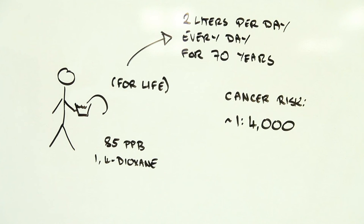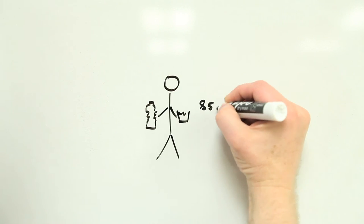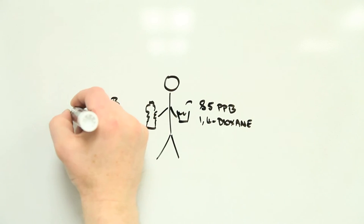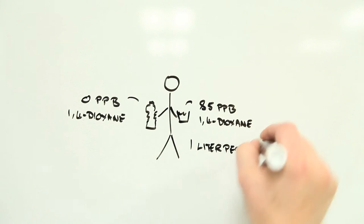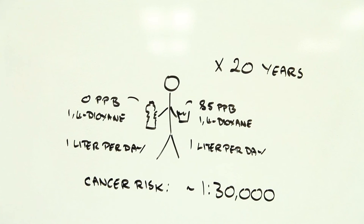So what if we consider a more realistic scenario? Imagine, for instance, that you've lived in Ann Arbor for 20 years and only drink 1 liter a day of tap water. Your highest dioxane-related cancer risk in this case is closer to 1 in 30,000.